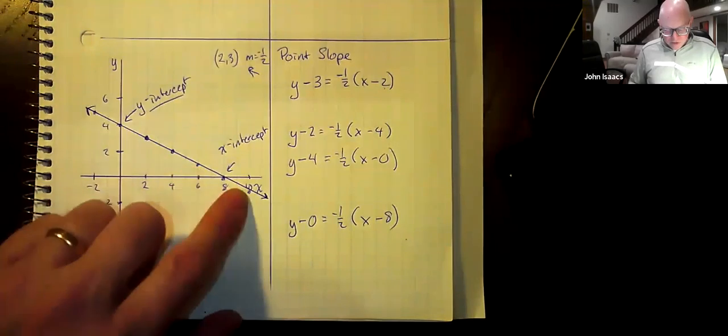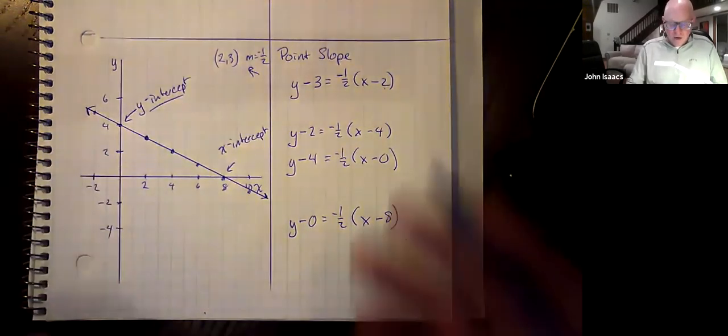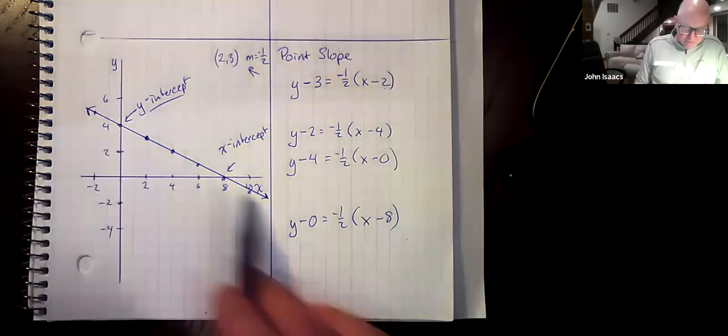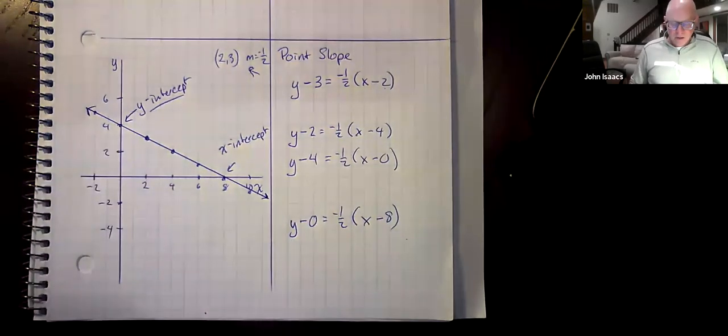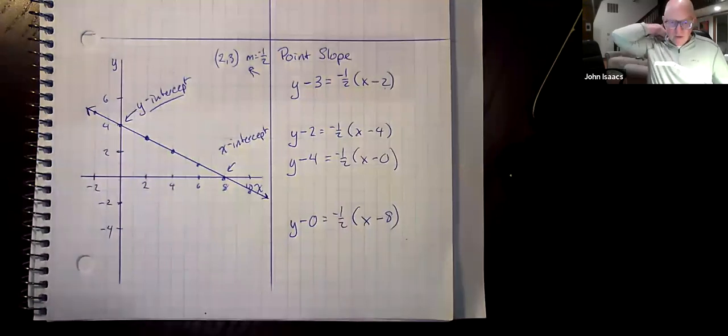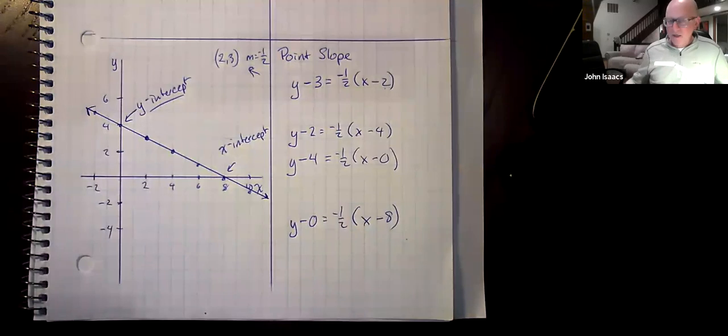You could use this point also, or this point, or this point. You could use any point you want to create an equation for this line in point-slope form. So there's four equations, all of which represent exactly the same line. The next video will take this idea a step further.